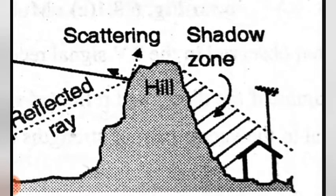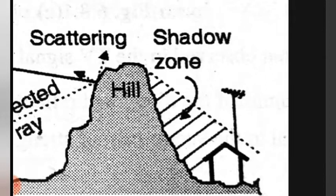ये जो hills हैं, वो जो भी signals हैं उनको absorb करते हैं, रोकते हैं, और उसके बाद जो shadow zone होता है — जो पहाड़ के बाद में अपना घर — वहाँ पे जो signals आते हैं वो shadow zone से आते हैं, तो वो weak signals होते हैं. The signal strength is very low in the shadow zone, therefore the receiving antenna needs to be taller to receive the signal. अगर पहाड़ी के बाद में अपना घर हो, तो antenna की height बहुत tall रखनी चाहिए, तब ही अच्छा signal मिलेगा.